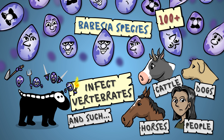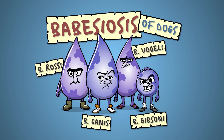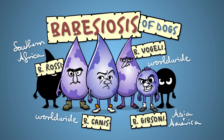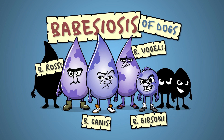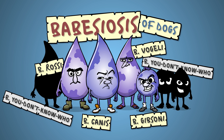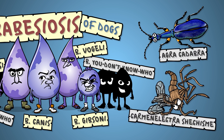In this video, we'll focus on the Babesiosis of dogs, which is caused by primarily four Babesia species depending on location. There are more than four, of course, but the others don't see that much play. Scientists haven't even bothered to name some of them, because naming things is really hard. Why else would this insect be called Agrocadabra, and this one Carmen Electro?